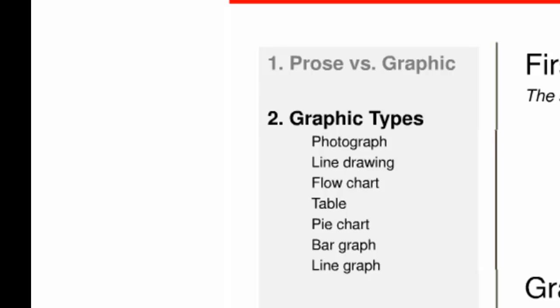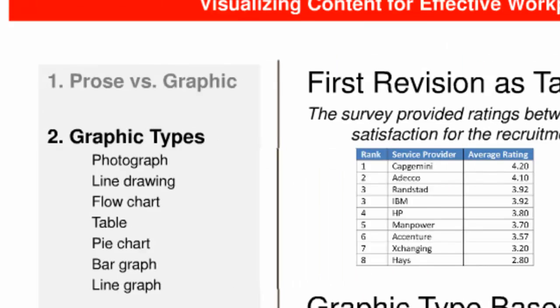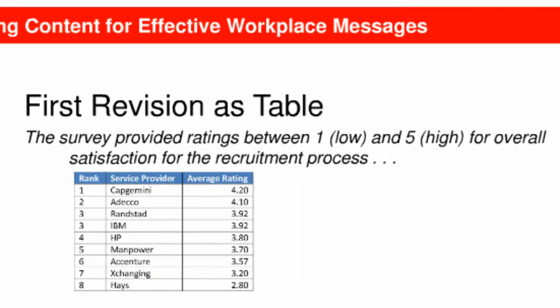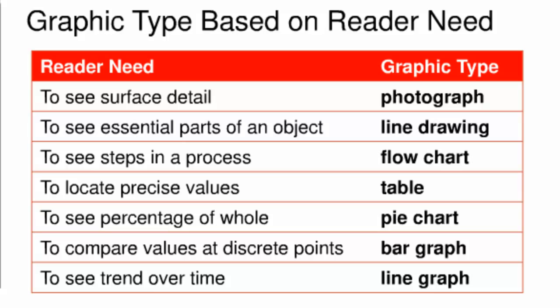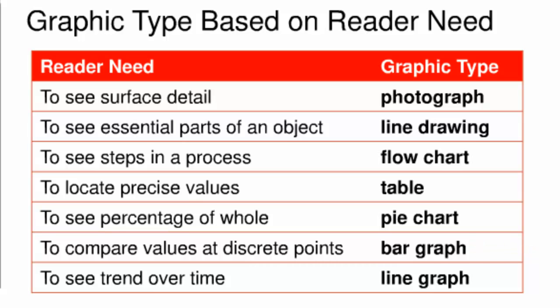Let's continue by looking at the second aspect of developing graphic content: choosing the best type of graphic. The writer of the report originally created a table to present survey data for the audience of service providers. My question is, is this the best type of graphic for the content? This table describes how common types of graphics meet different reader needs. It says a table will allow the report readers to locate precise values for each provider's survey ratings. But that seems less critical for the readers in this case than comparing values. I have a hard time imagining readers taking time to read all of the detailed values in the table, so some other form of graphic would likely be more effective in this situation.